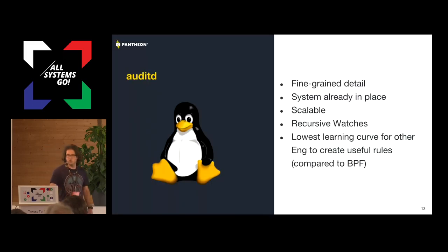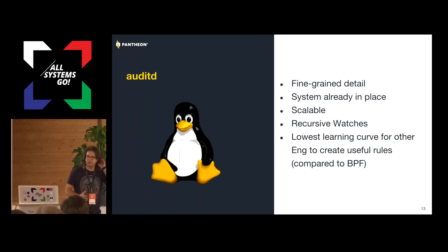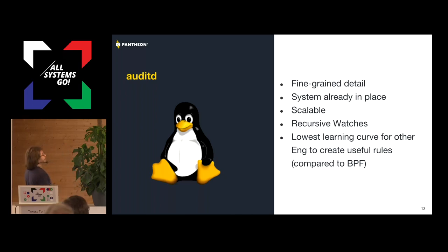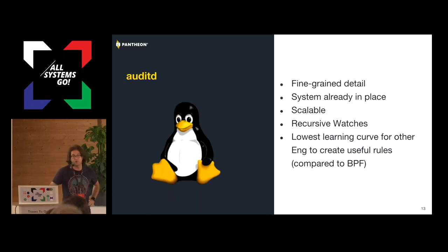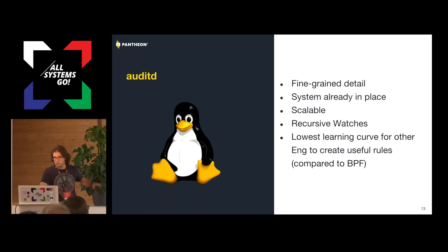That brought us to auditD. We were also considering BPF — some of us really liked that idea — but we didn't make that happen in this implementation. AuditD gave us fine-grained detail, more than we actually need. It was already present on all our systems, in the kernel. It allowed us to watch whatever we wanted, and the learning curve for our engineers to build rules for auditD was less steep than BPF. We don't have a lot of C engineers — David here is one of two. This also allows us to potentially use the system for other kinds of auditing in the future.